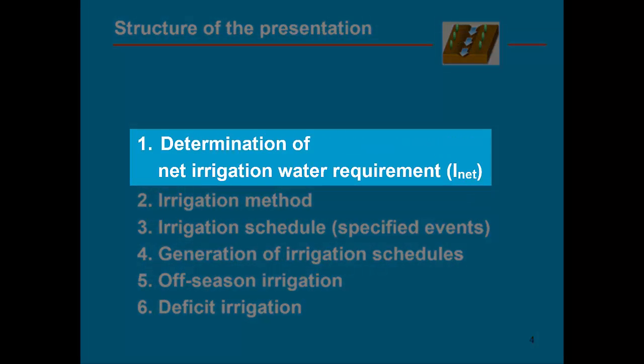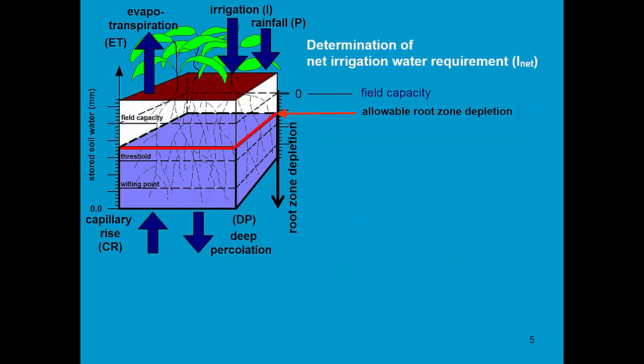Let's start with the determination of the net irrigation water requirement. The determination of net irrigation requirements makes use of a threshold. It is the allowable root zone depletion. When, due to the absence of rainfall, the irrigation water content drops below that threshold, then a small amount of water will be injected in the root zone to keep the soil water content at that level for that day.